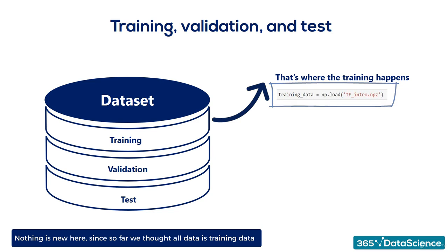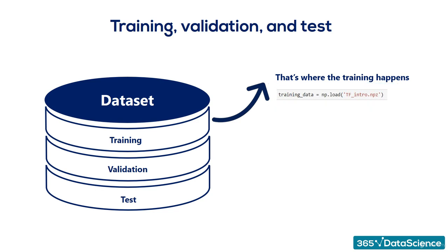Okay, let's check out the other two subsets. The validation dataset is the one that will help us detect and prevent overfitting. Let's see how that works.